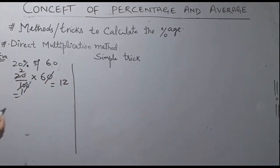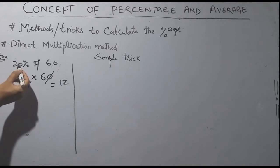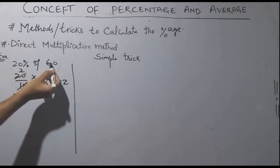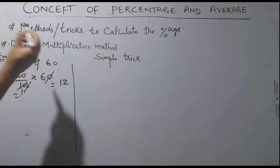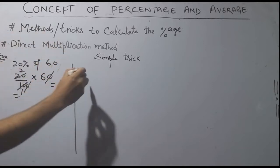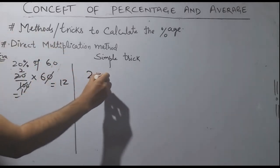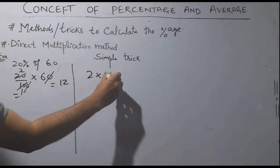This is a simple trick: if the percentage is a multiple of 10, just cancel zeros and multiply. So 20% of 60 simplifies to 2 × 6 = 12.